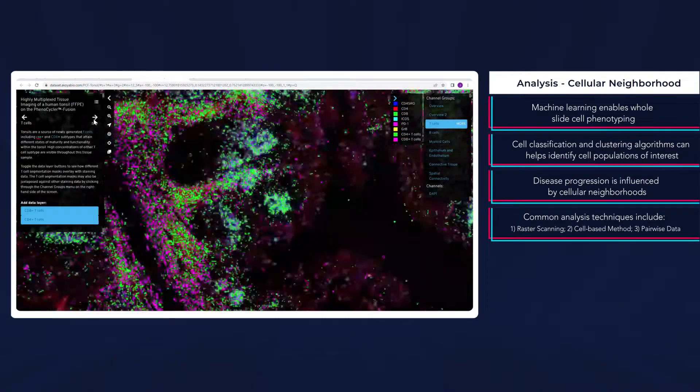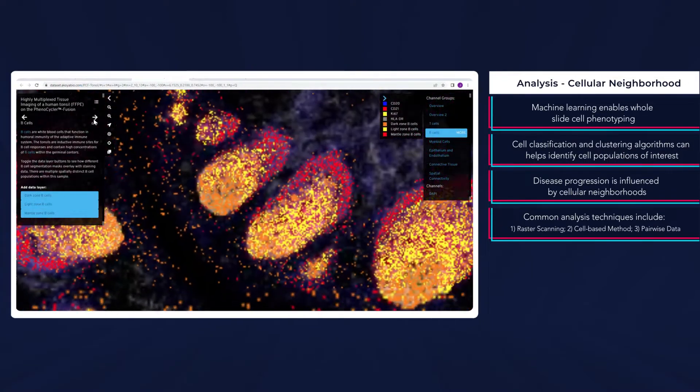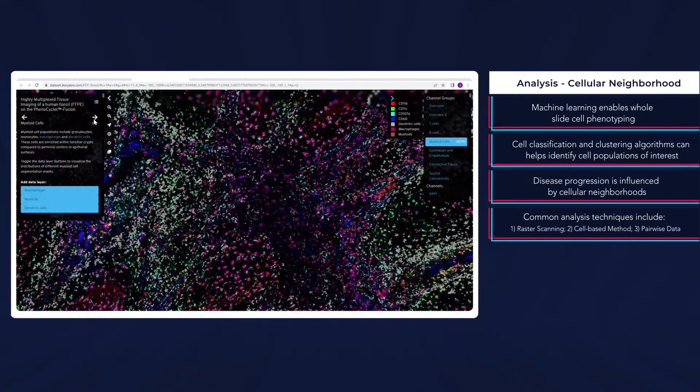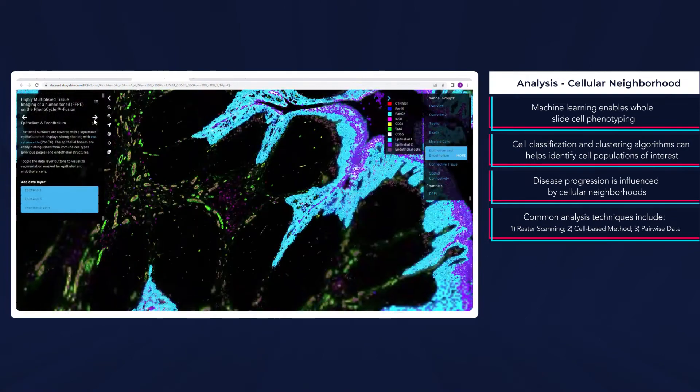Some common methods of cellular neighborhood analysis include raster scanning, the cell-based method, or pairwise data.